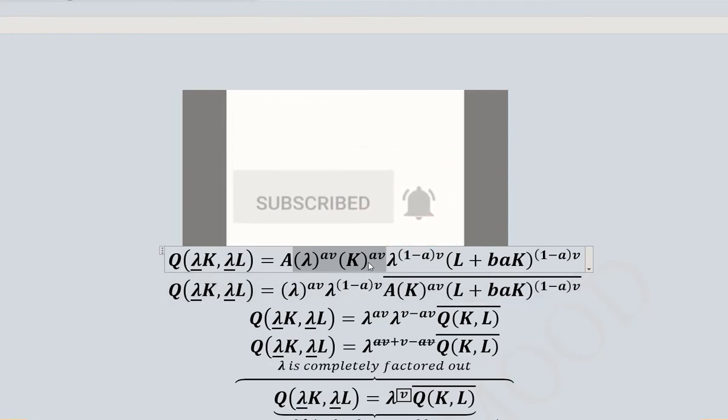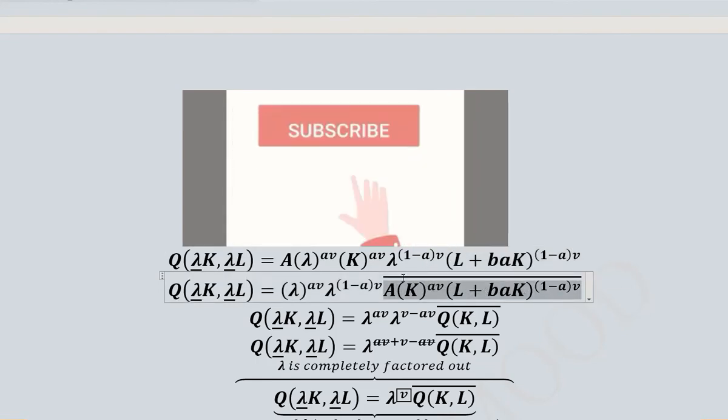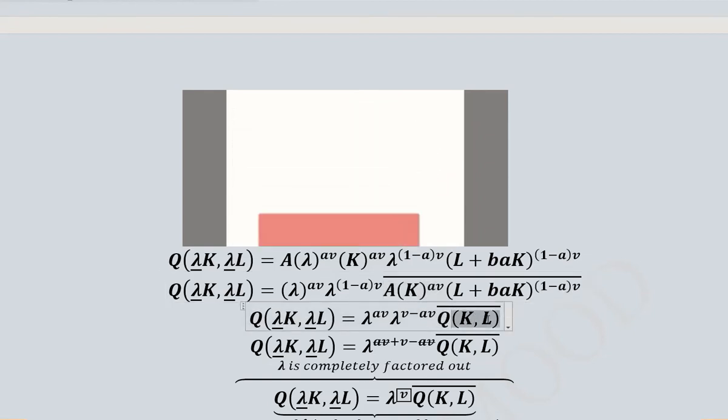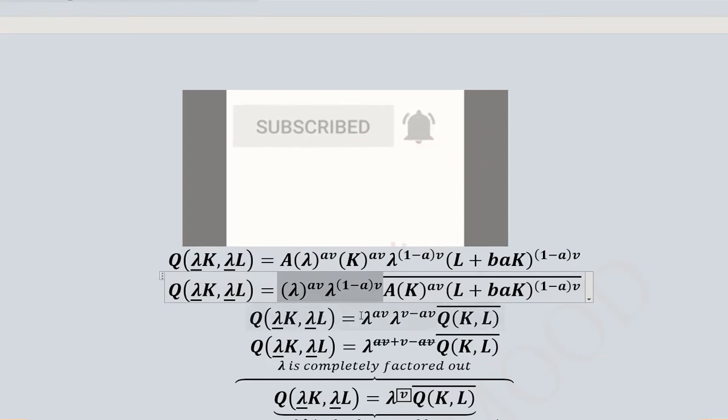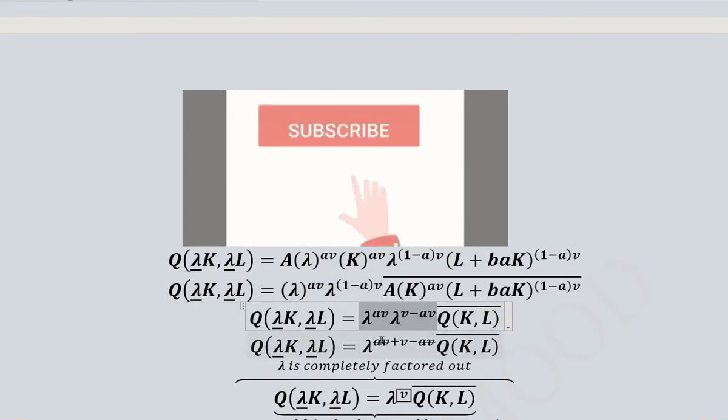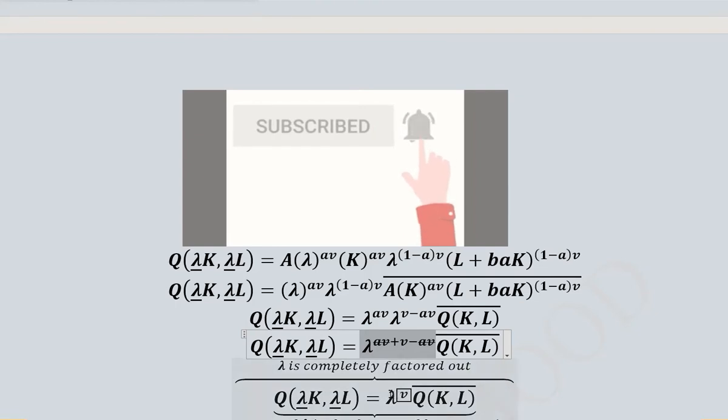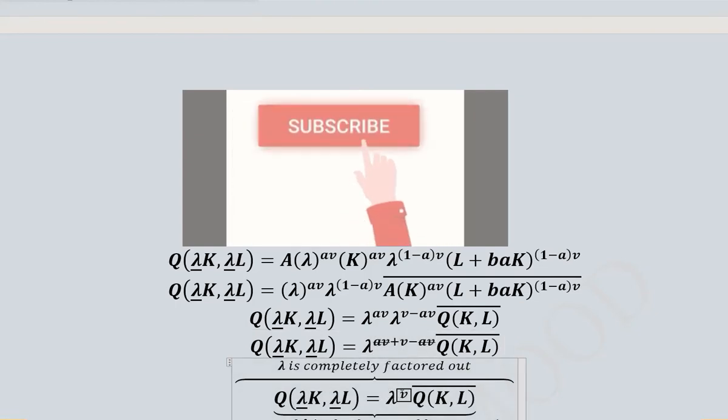The whole power is now spread on lambda while the remaining terms stay the same. We can see that a few terms combined together give rise to the original production function: A, K^(av), and one term from the parentheses. We've put an overbar on this to show it equals the actual production function, while the other lambda terms are left separate. Now it's easy to solve because the bases are the same.